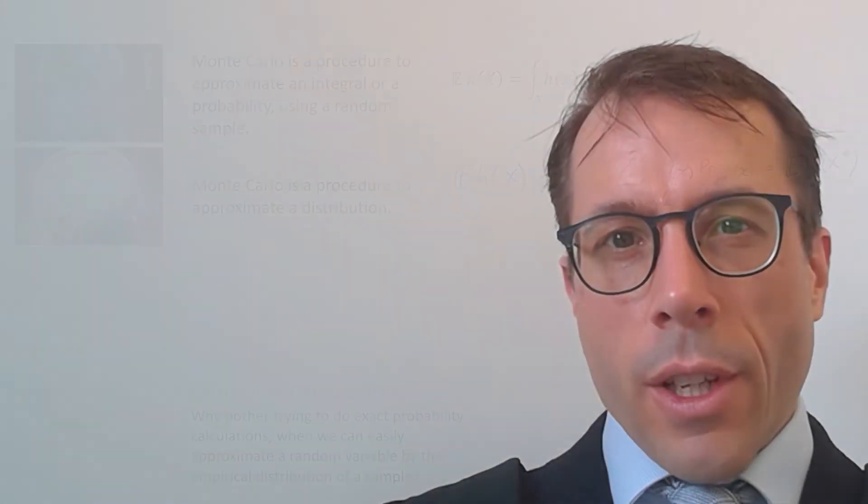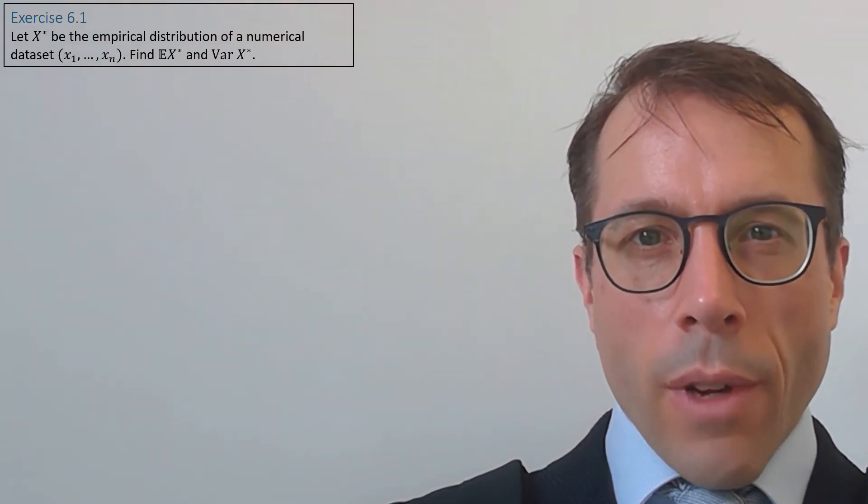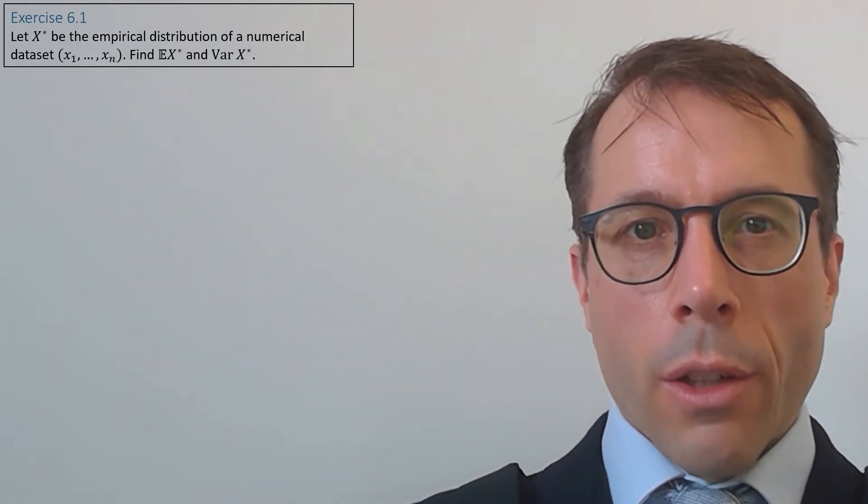There's one last nifty thing about empirical distributions that is worth seeing. Here's a basic calculation. Let x star be the empirical distribution of a data set. This question asks us what's the expected value of x star and the variance? Obviously this only works for numerical data sets.